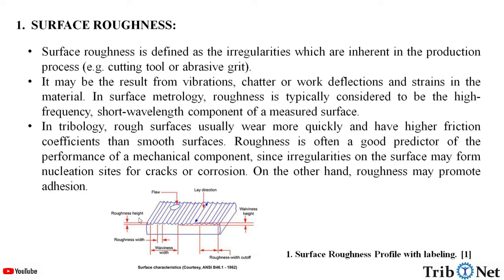Here in this figure, we can see the surface roughness profile with proper labeling. We can see the flaw, the lay direction, waviness height, roughness height, roughness width, waviness width and roughness width cutoff. These are the surface characteristics of a surface roughness profile.